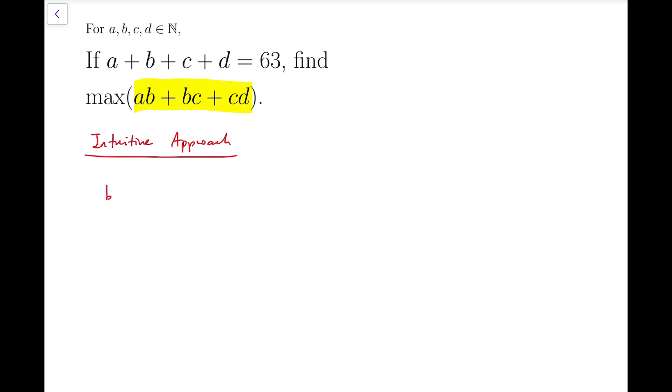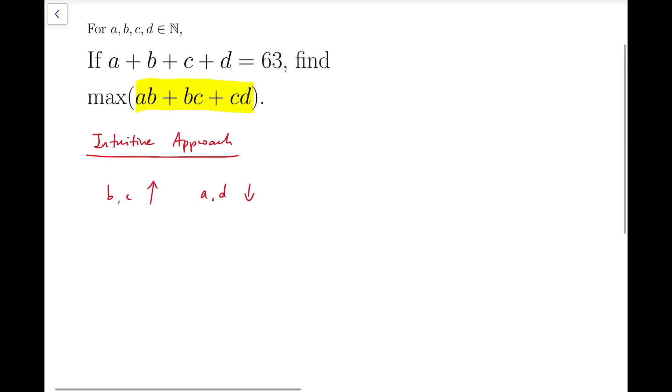So this expression will take maximum if B and C is as large as possible, while A and D, the numbers that appear the least often, should be as small as possible, which means A and D should be 1 when maximum occurs.